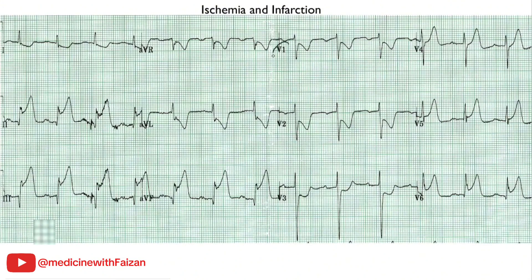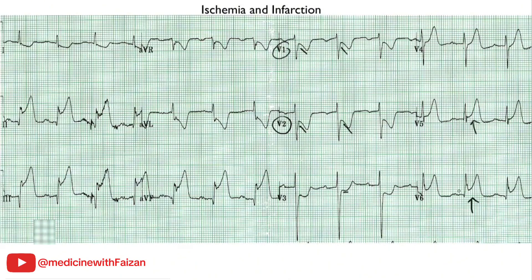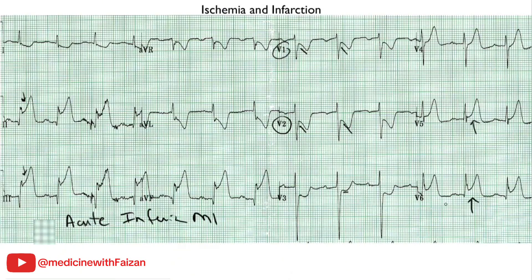Here is the next ECG. At first glance, V1 and V2 show down-dropping ST depression — you might think this looks like ischemia. But V3 shows only a little horizontal ST depression, V4 is isoelectric, V5 has a little ST elevation, and V6 has a lot of ST elevation. Looking at the inferior leads — leads 2, 3, and AVF — you have essentially tombstones, with marked ST elevation and only a tiny bit of R waves. This is consistent with an acute inferior wall myocardial infarction. There may even be some lateral involvement because V5 and V6 have ST elevation as well.